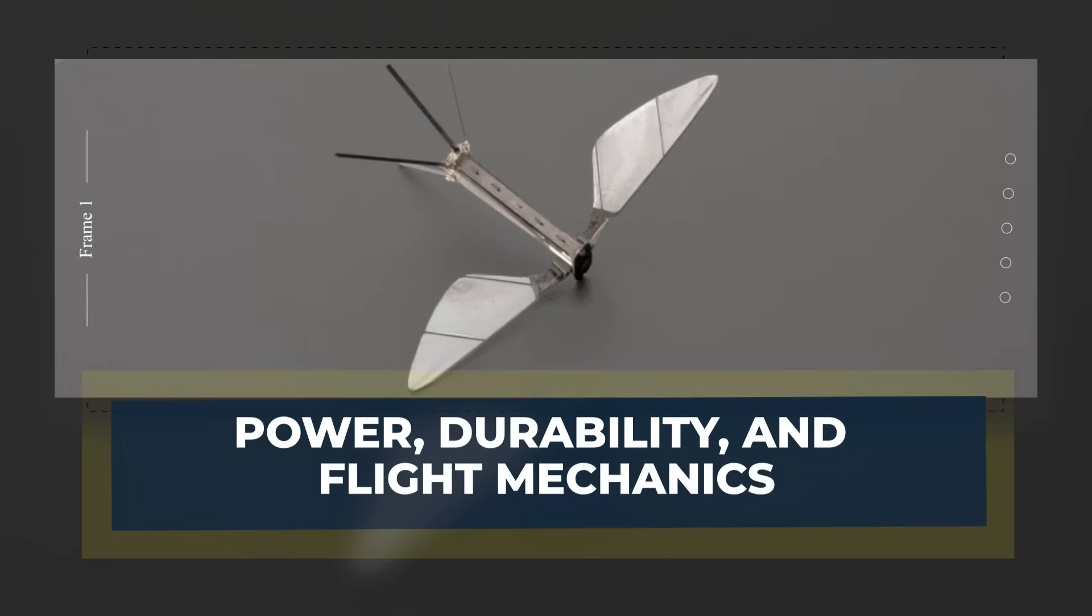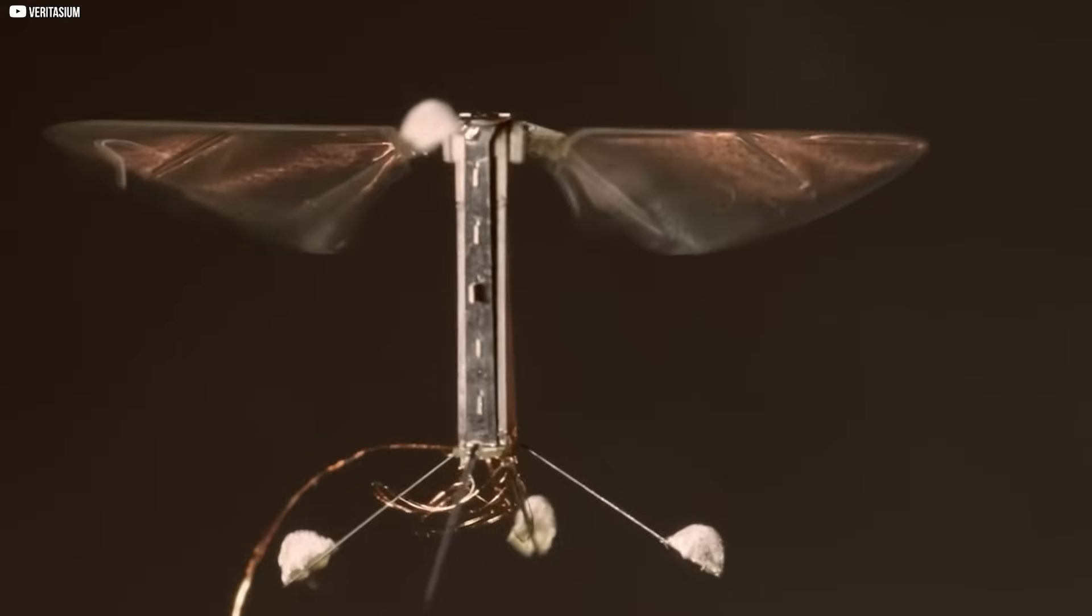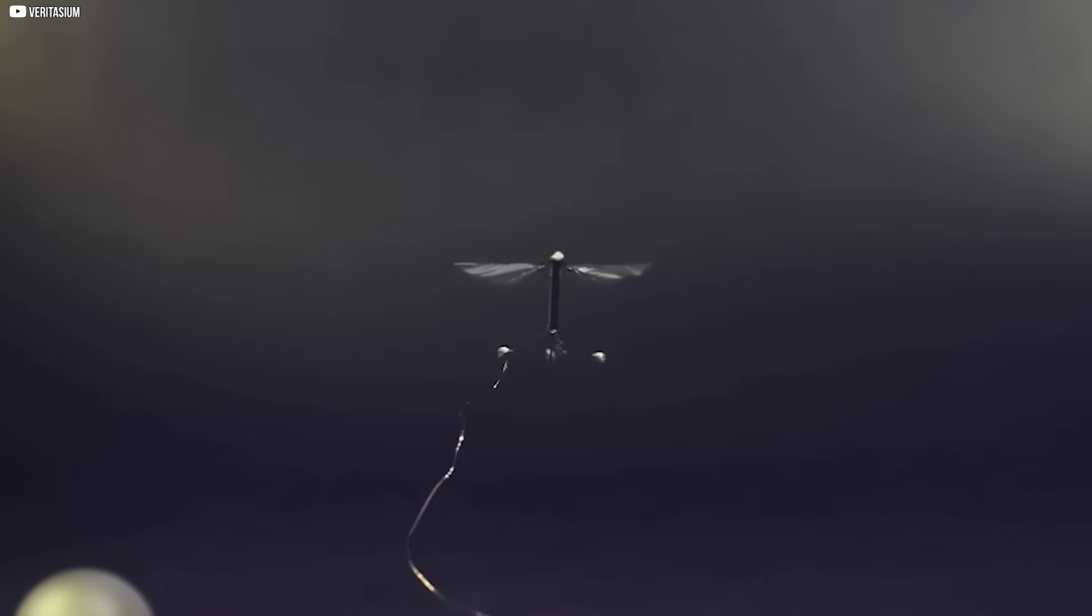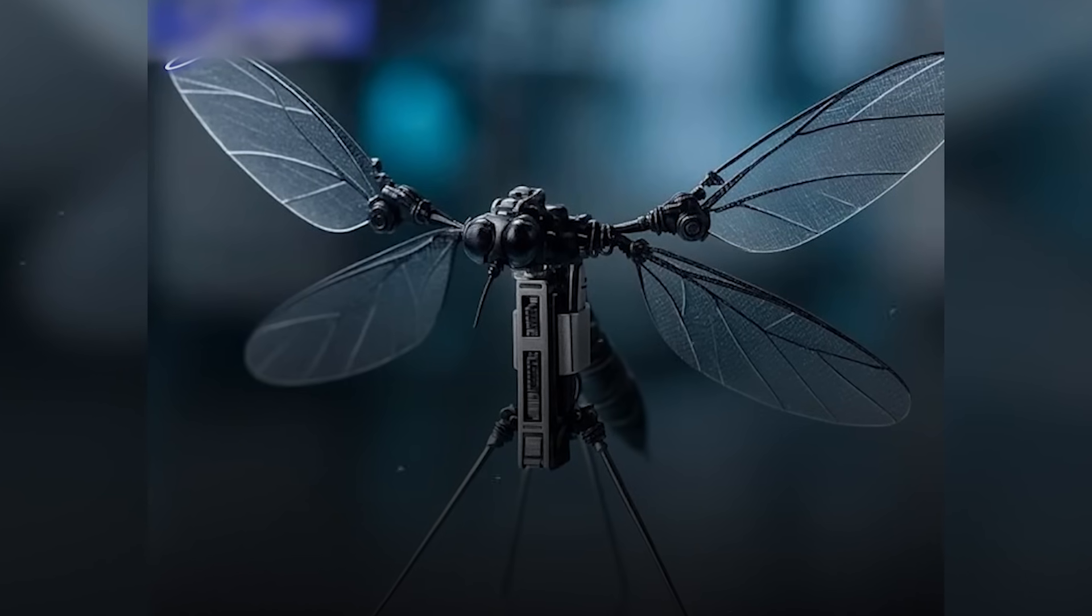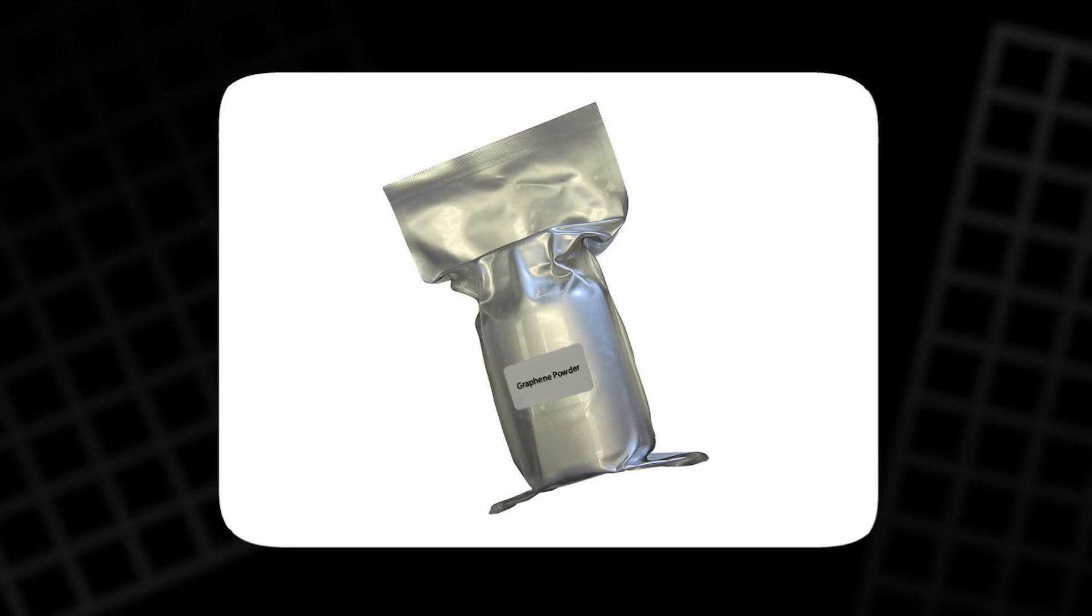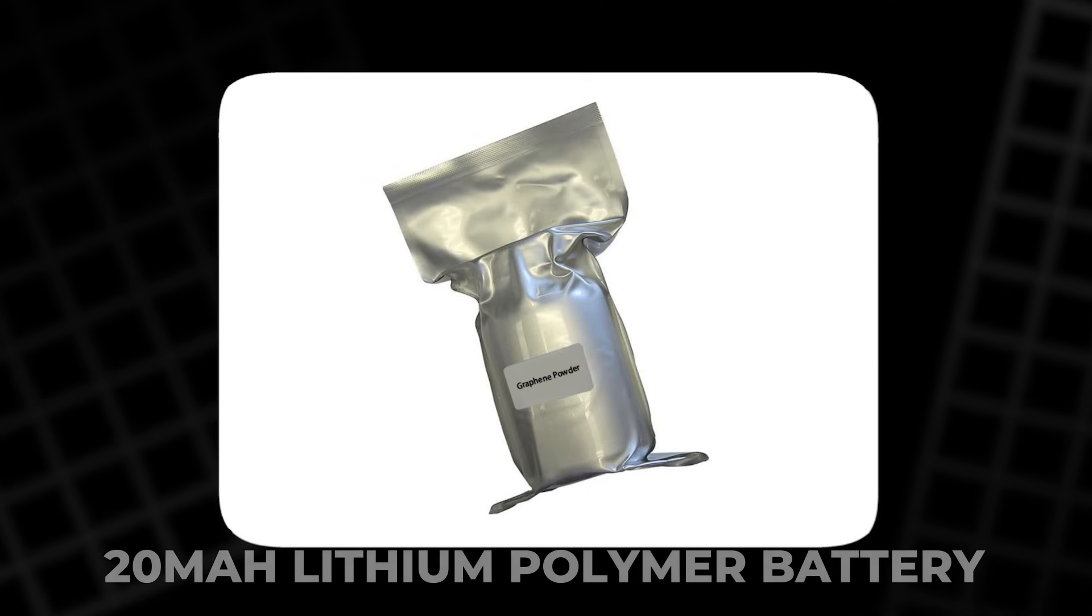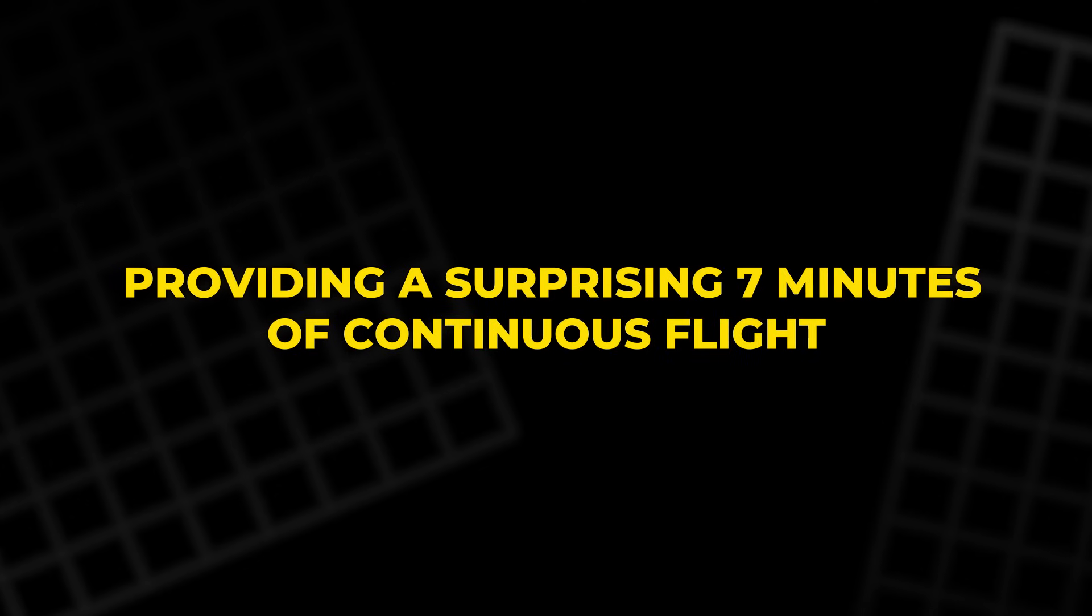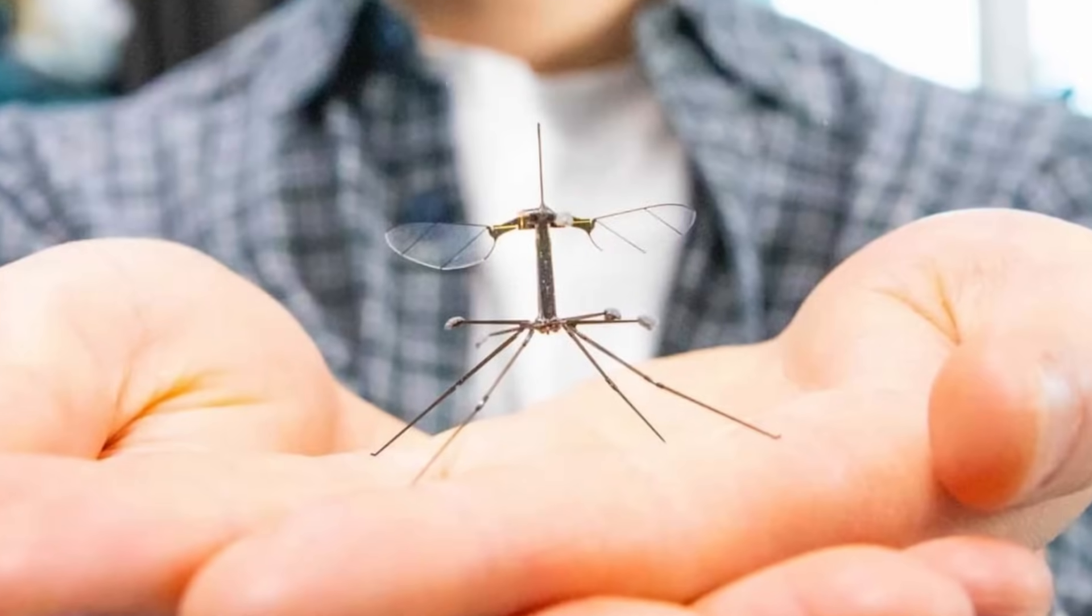Despite its minuscule size, the NUDT Mosquito packs a surprising amount of power and durability, making it a highly functional and resilient tool for covert operations. The drone is powered by a 20-milliamp-hour lithium polymer battery wrapped in graphene, providing seven minutes of continuous flight or up to two hours when perched and listening.